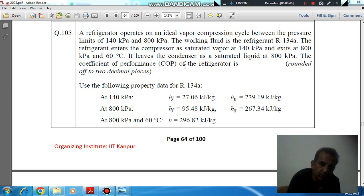The coefficient of performance COP of the refrigerator is to be determined, rounded to two decimal places. Use the following property data for R-134a: At 140 kPa, hf = 27.06 kJ/kg, hg = 239.19 kJ/kg. At 800 kPa, hf = 95.48 kJ/kg, hg = 267.34 kJ/kg.